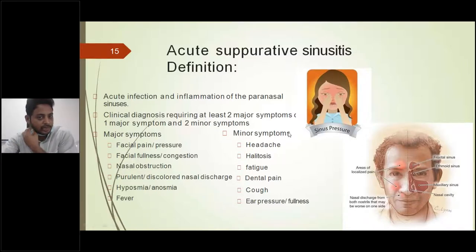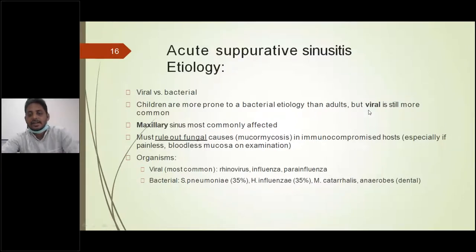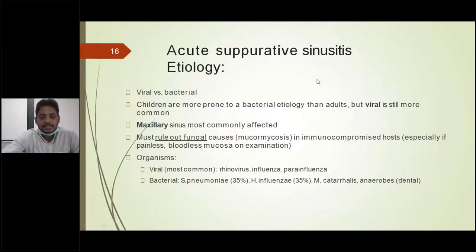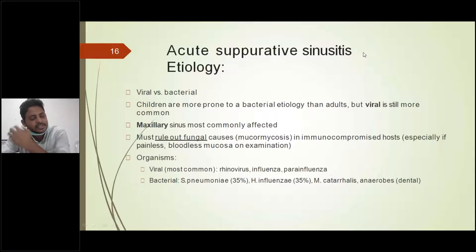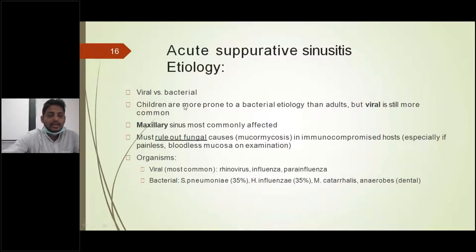Children are more prone to bacterial etiology than adults, but viral is still more common. The sinuses present at birth are maxillary and ethmoid sinuses, so in children the sinusitis more commonly present is maxillary and ethmoid sinusitis. In children, ethmoid sinusitis is more common than maxillary sinusitis. In adults, maxillary sinusitis is the most commonly affected sinus.